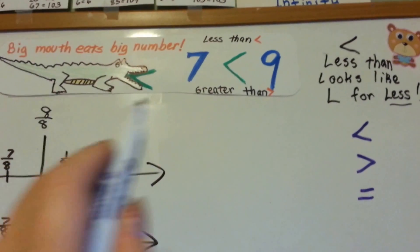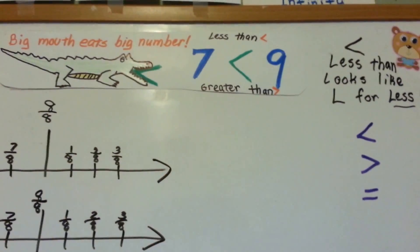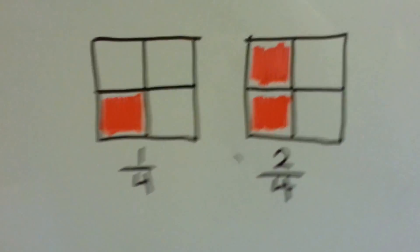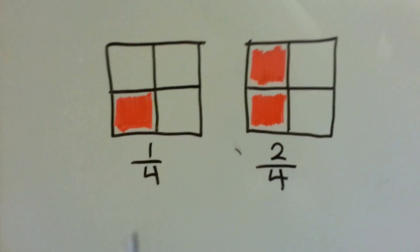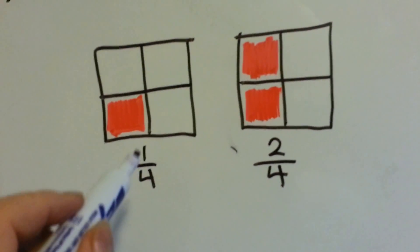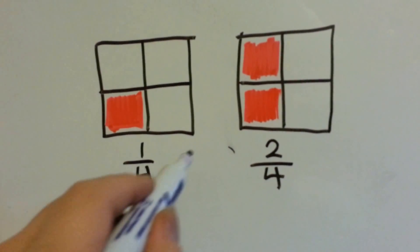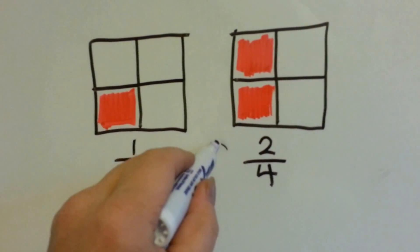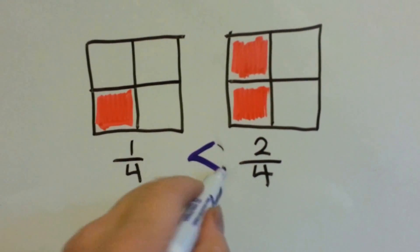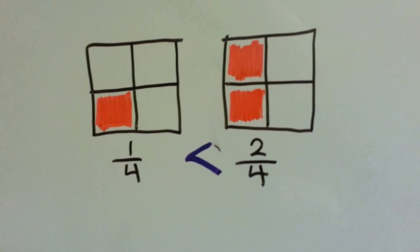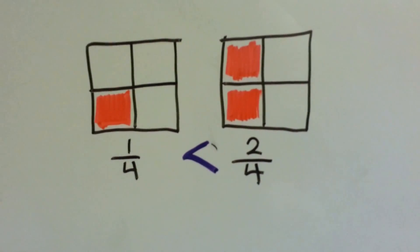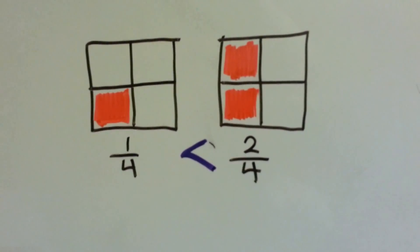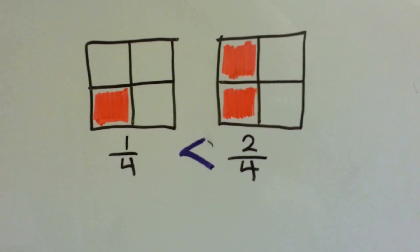Big mouth eats the big number. So, we would say that one-fourth is less than two-fourths. The big mouth is going towards the big number.